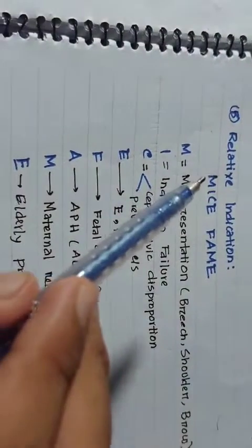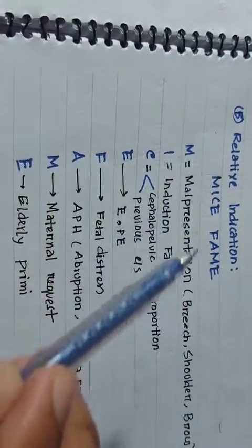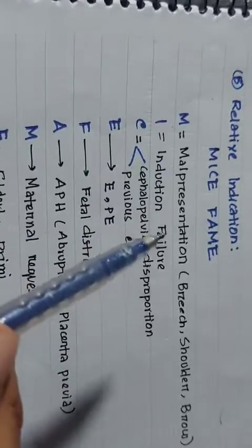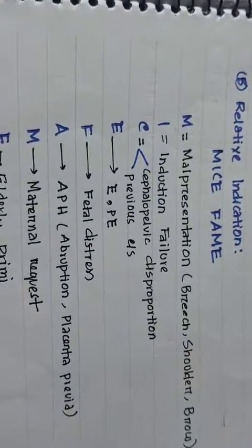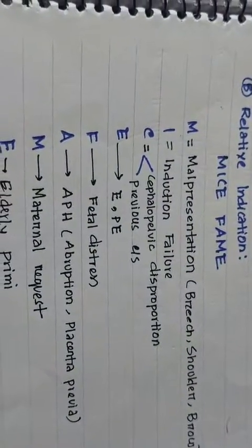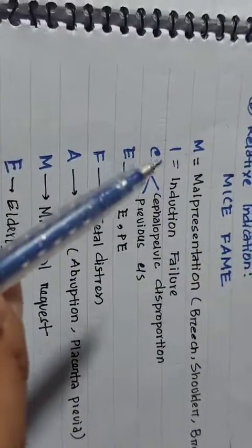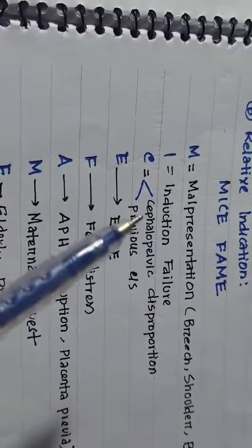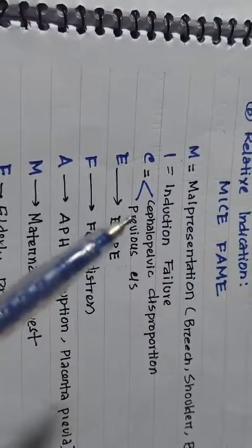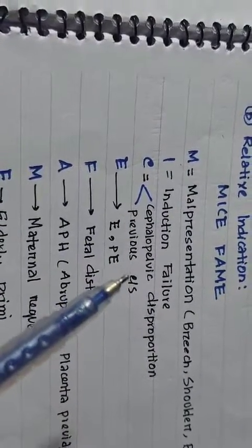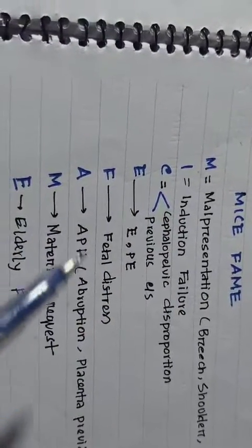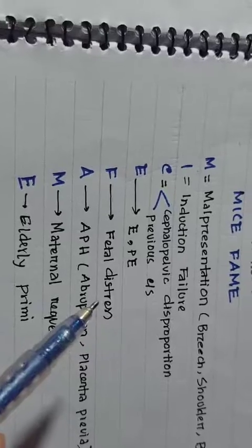Now for relative indications, the mnemonic is 'MICEFAM'. M for malpresentation — breech, shoulder, brow presentation. I for induction failure. C for cephalopelvic disproportion and previous caesarean section. E for eclampsia and pre-eclampsia. F for fetal distress, which is a very important cause.